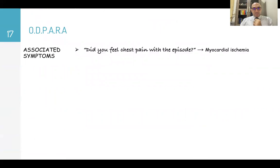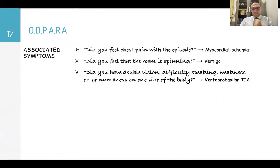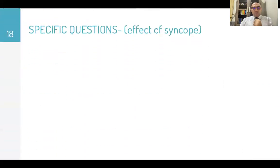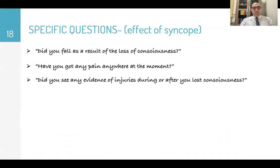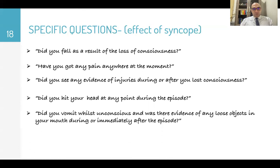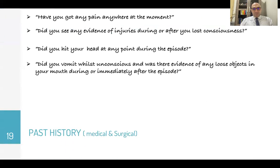Also ask about associated symptoms: Did you feel chest pain with the episode — myocardial ischemia? Did you feel the room spinning — vertigo? Did you have double vision, difficulty speaking, or weakness or numbness in one side of the body — vertebrobasilar attack? Also ask about the effects of syncope: Did you injure yourself, hit or hurt yourself? Did you fall as a result of loss of consciousness? Do you have any pain anywhere now? Was there evidence of any injuries? Did you hit your head? Did you vomit while unconscious, or were there any loose objects in your mouth?